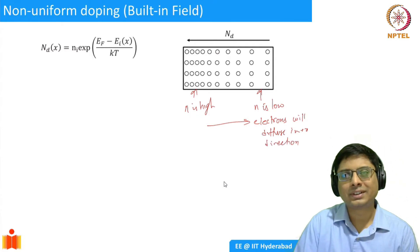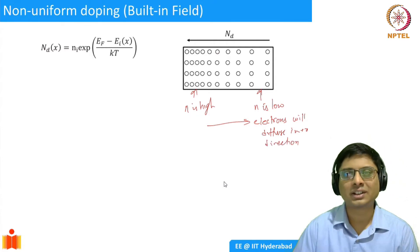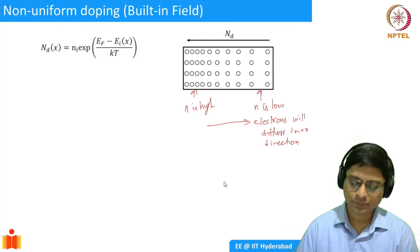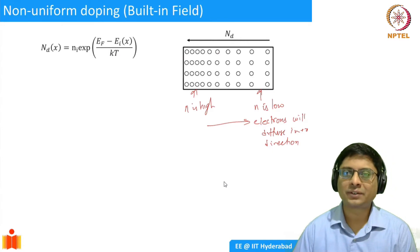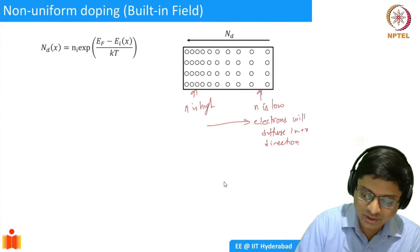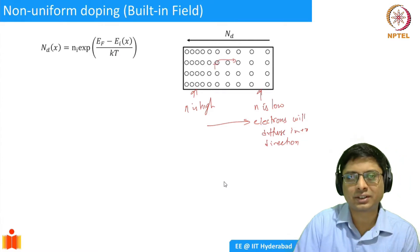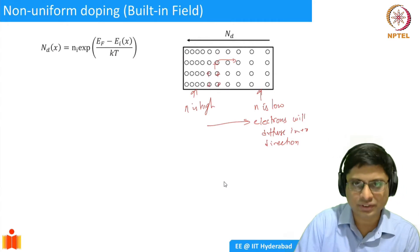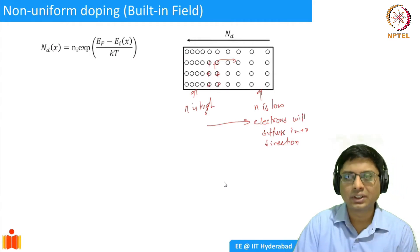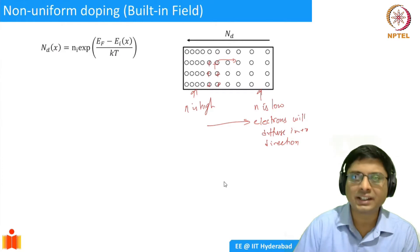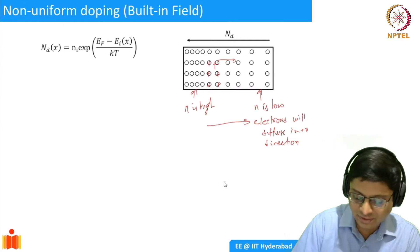How long will they diffuse? When an electron diffuses away from one location, it leaves behind a positive charge. So if this electron has moved, it will leave behind a positive charge in its original location. Similarly, positive charges are left behind wherever electrons have moved — creating a gradient in the space charge, which results in an electric field.